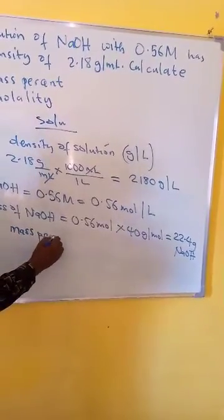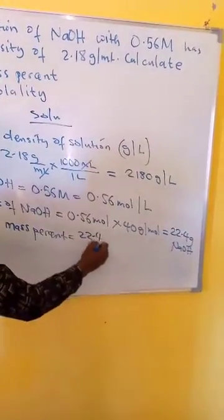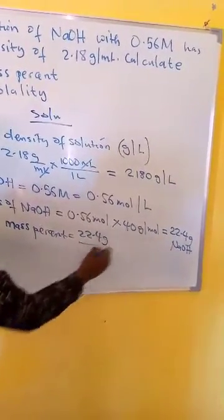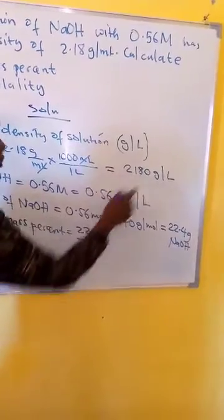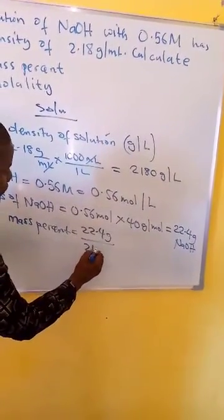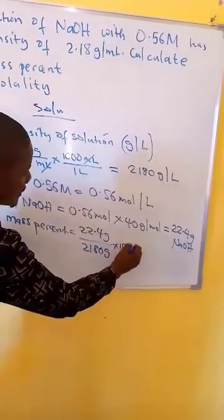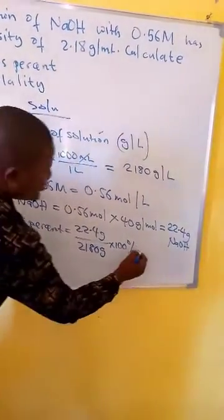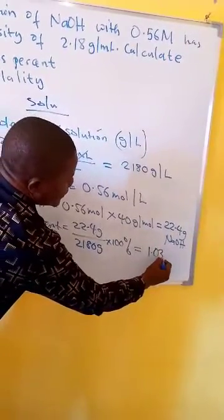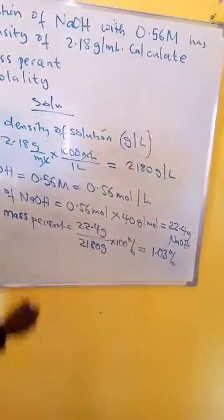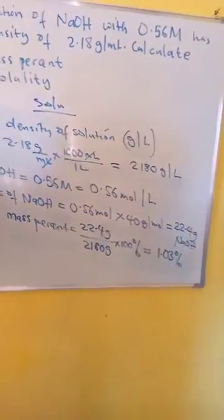So we have the mass of sodium hydroxide, which is 22.4 grams, over the mass of solution, which is 2180 grams, times 100 percent. When we divide, we get 1.03 percent of sodium hydroxide. That is the mass percent.